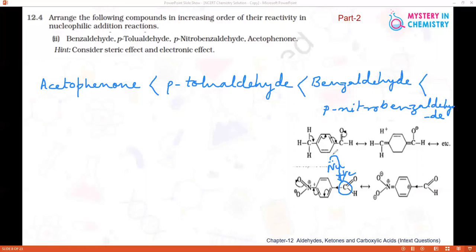Whereas in the case of paratolualdehyde, what happens here is steric hindrance is minimum, but due to hyperconjugation of this methyl group at the para position, this carbon is more negative and less positive as compared to this one. So nucleophilic attack will be more difficult in this case. It is more difficult in the case of paratolualdehyde.